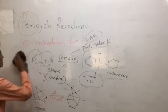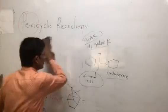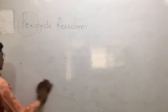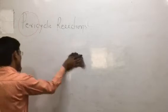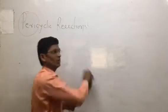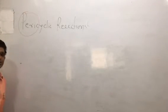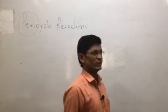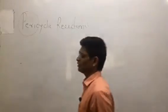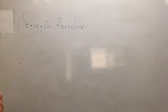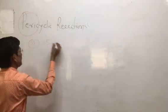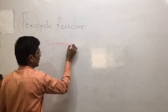Diels-Alder reaction is a part of the cycloaddition reaction. Diels-Alder reaction is a stereospecific reaction because of 100% stereoselectivity. It is an eco-friendly or green reaction. The third part is called the sigmatropic reaction — a pericyclic sigmatropic reaction.